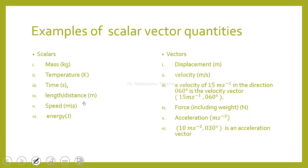A velocity of 50 meters per second in a direction of 60 degrees is a velocity vector. We write it as 50 meters per second at 60 degrees — the magnitude is 50 m/s and the direction is 60 degrees. Similarly, an acceleration vector might be 10 meters per second squared at 30 degrees. When writing a vector, we write the magnitude first and the direction second.